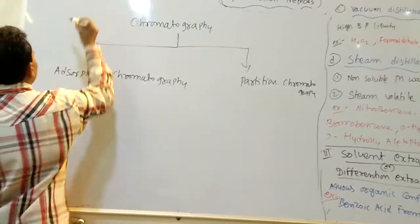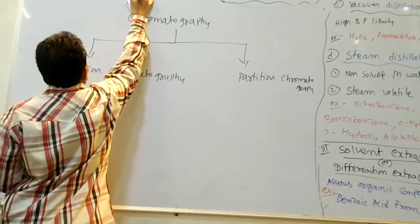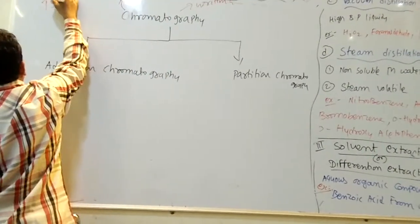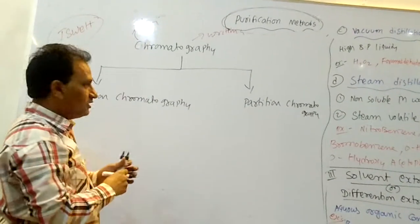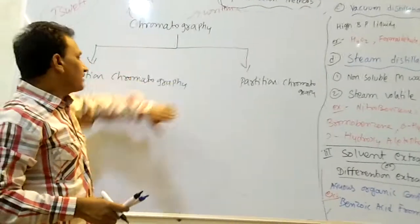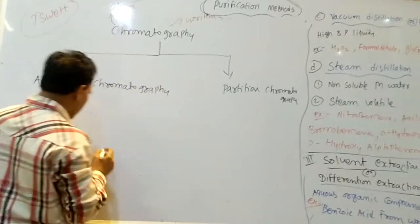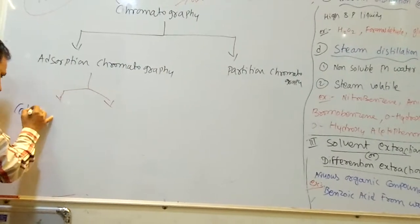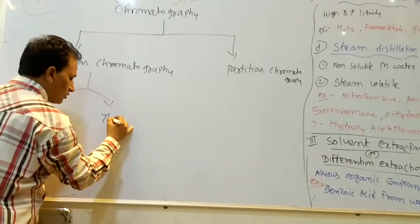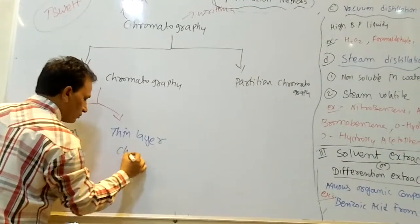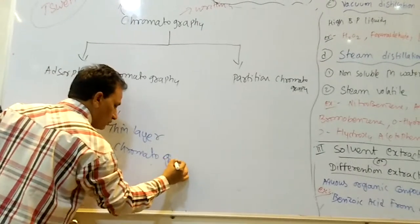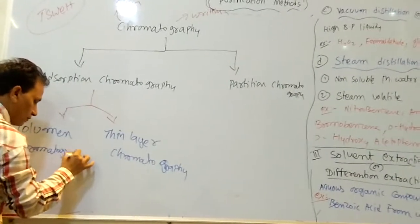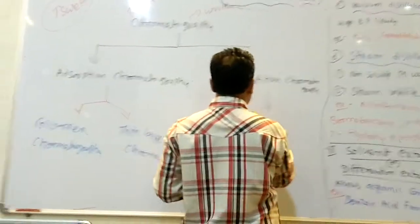Chromatography was proposed by Svet, who purified organic compounds on the basis of color separation. Chromatography is of two types: adsorption chromatography and partition chromatography. Adsorption chromatography includes column chromatography and thin layer chromatography. Partition chromatography has only one type: paper chromatography.